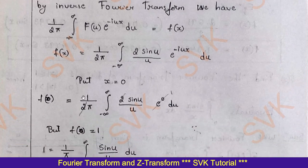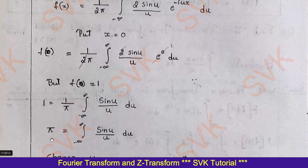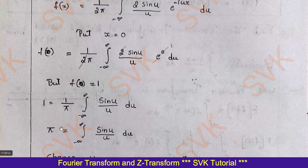We get f(0) = (1/2π) times the integral from minus infinity to plus infinity of 2 sin(u)/u du, since e^0 = 1. The factor of 2 cancels with 2π, and we know f(0) = 1. Substituting on the left-hand side: 1 = (1/π) times the integral from minus infinity to plus infinity of sin(u)/u du. Cross-multiplying gives the integral from minus infinity to plus infinity of sin(u)/u du = π.